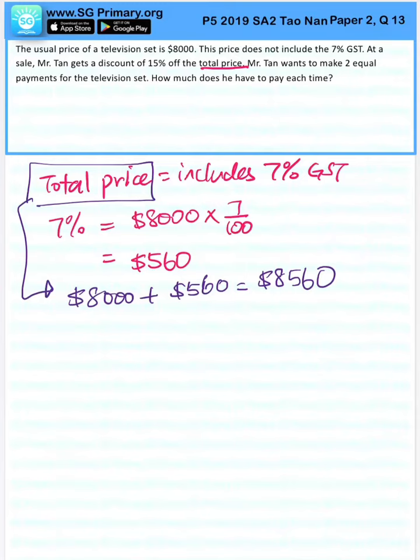Now, he wants to make two equal payments each time after he gets a 15% discount. So let's find the 15% discount first.